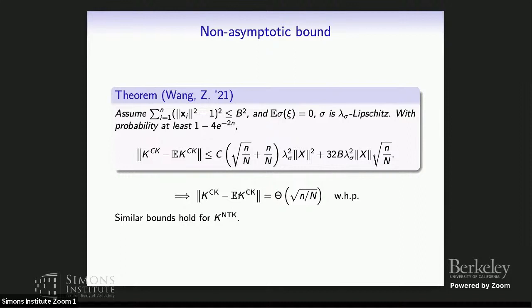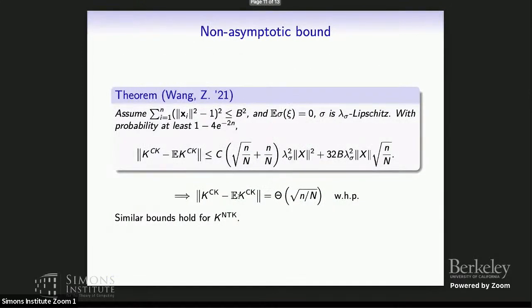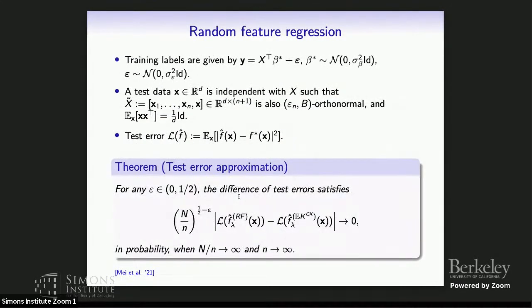If you do matrix concentration using matrix Bernstein inequality, you get square root of d over big N but up to a log factor. Using this concentration result, we can analyze a simplified model for random feature regression.